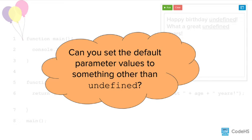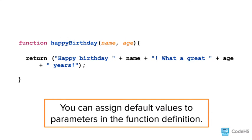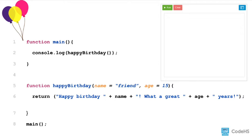This might lead to the question: can you set the default parameter values to something other than undefined? You sure can. You can add default values to parameters in the function definition. All you have to do is assign the parameter a value when you create the parameter. Here, we're assigning the default value of name to be 'friend' and the default value of age to be 15. So now when we call the happy birthday function without any arguments, it will use the default parameters of 'friend' and 15.